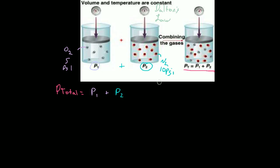Then we can solve for what the total pressure is. It'd be pressure one, which is 5 psi of O2, plus pressure two, which is 10 psi of N2. That's going to be equal to the total pressure, which would be 15 psi. Seems simple enough.